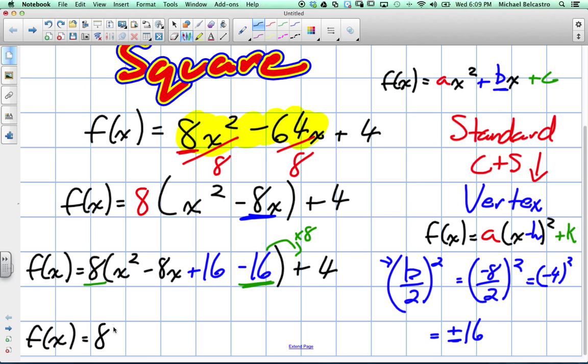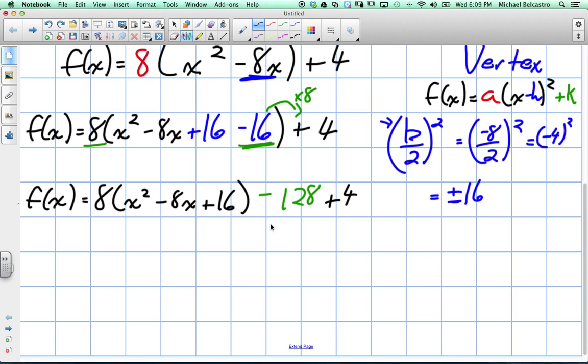Okay. So what that leaves us with is 8x squared minus 8x plus 16. Those are the only things inside the bracket. Outside the bracket, what do we get? What did you say? Negative 128. 128? Yeah. Okay. And then plus 4. So now that's good because we can combine it with this value out here. Okay. And let's do that. So next we'll read f at x is equal to 8 squared minus 8x plus 16. And when we put these together, it becomes negative 124.